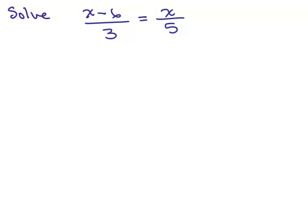Here's one for you to try, so put the video on pause and see if you could solve this one on your own first. It's a proportion, so we could multiply the x minus 6 times the 5, so 5 times x minus 6, and then we could multiply the 3 times the x.